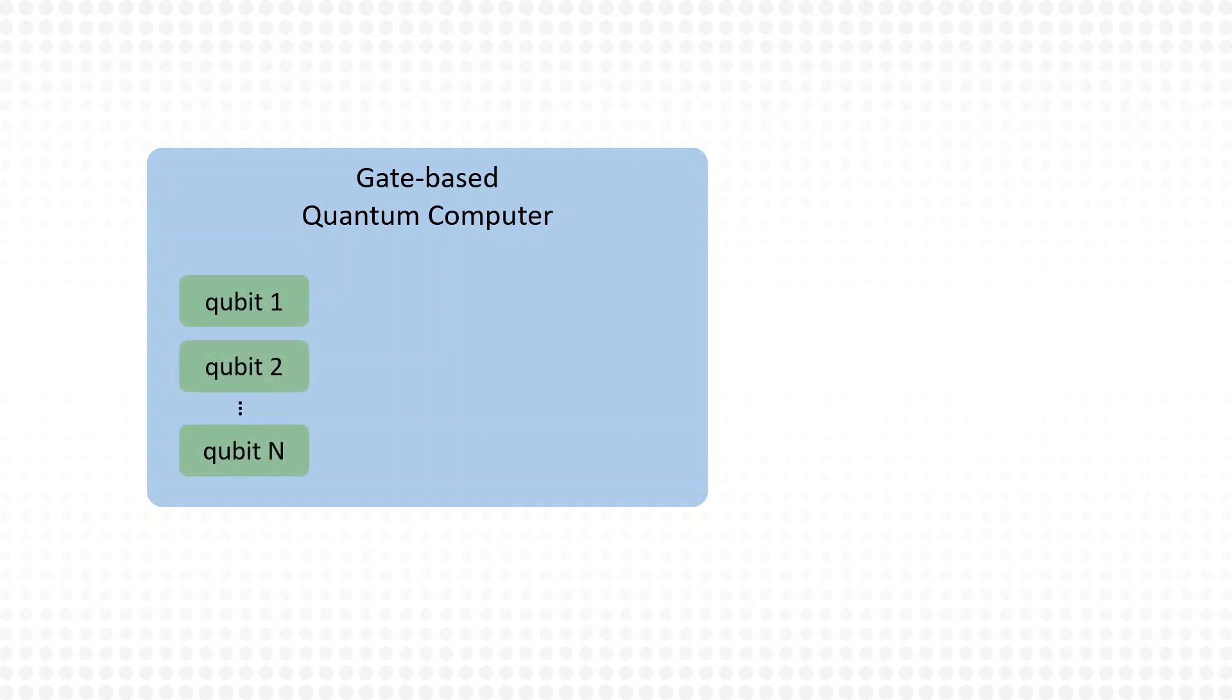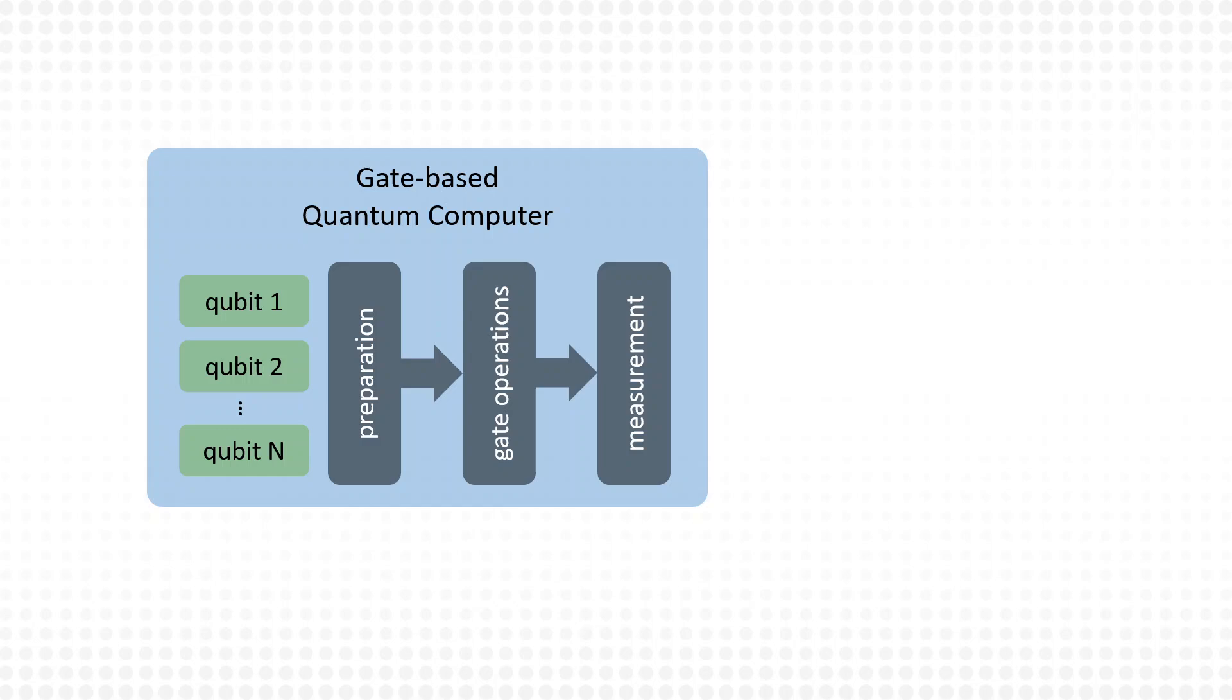Quantum algorithms on such a device work in three steps. First, the qubits are prepared in a well-controlled initial state. Second, a set of instructions are executed in the form of so-called quantum gates. Third, a measurement is performed. This measurement reveals a bit string, or sequence of bits, one bit for every qubit.